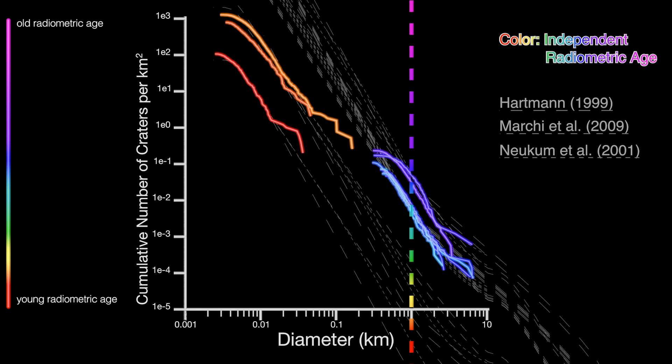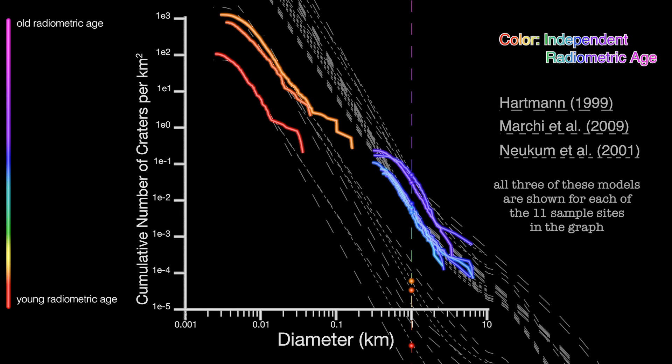That means that we need to use a model of what the crater population should look like, scale it to the craters that we do have, and figure out the N1 point from those models. This isn't perfect, especially when the models disagree, but it's the best that we have at this point in time.